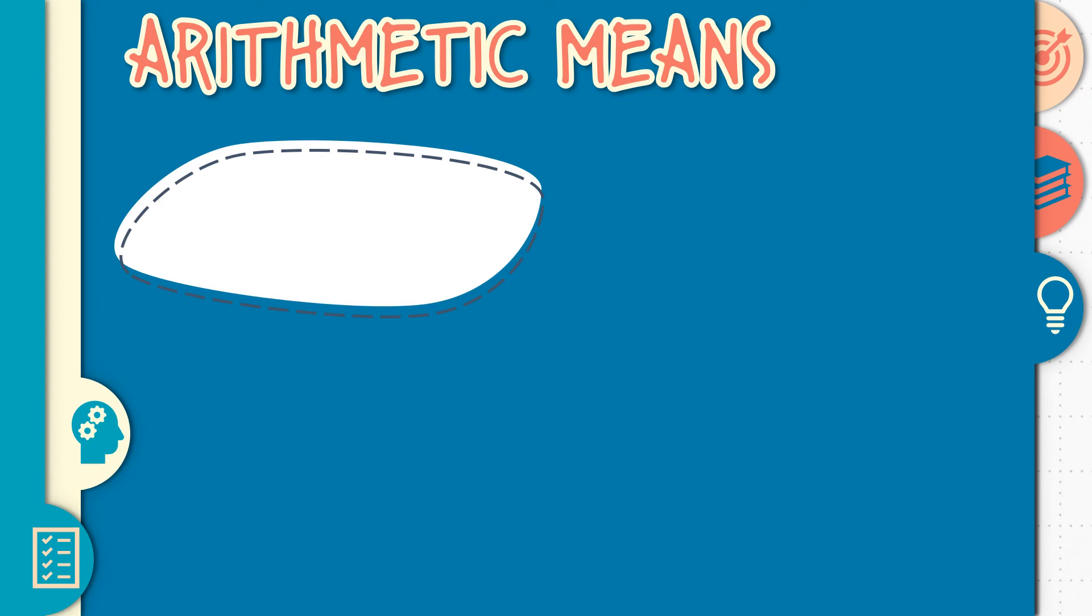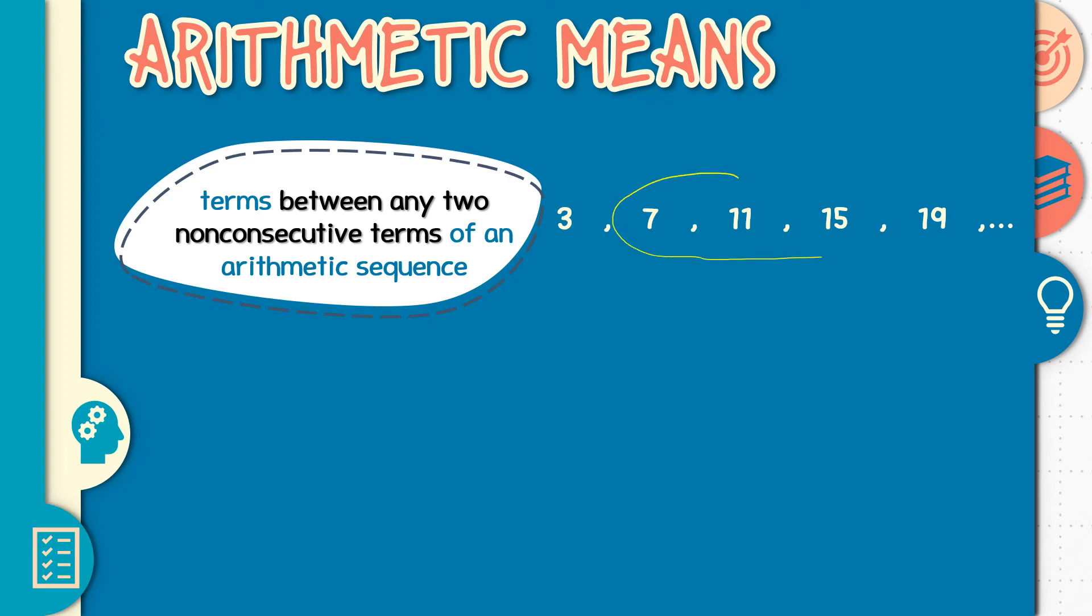Now let us have arithmetic means. Arithmetic means, mean, means that, or these are terms between any two non-consecutive terms in an arithmetic sequence. Ito yung mga terms sa gitna o sa paggita ng dalawang term na hindi magkasunod. For example, in this particular sequence 3, 7, 11, 15, 19. Si 7, 11, 15 ay arithmetic means between 3 and 19. O kaya naman, si 7 at 11 ay arithmetic means sa pagitan ni 3 at saka ni 15. Basta ito yung nakapaloob doon sa dalawang term na hindi naman magkasunod.